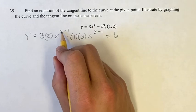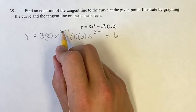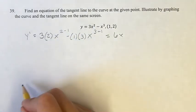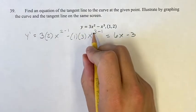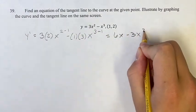Now we just simplify this: 3 times 2 is 6, x to the 2 minus 1 is x to the 1, x to the 1 is just x, minus 1 times 3 is minus 3, x to the 3 minus 1 is x squared.